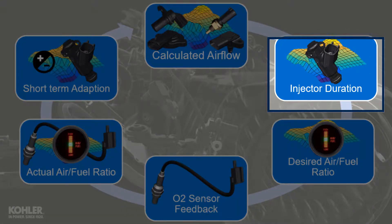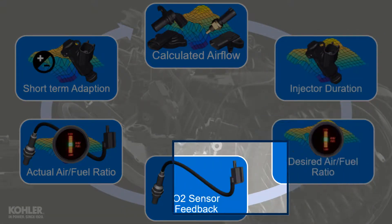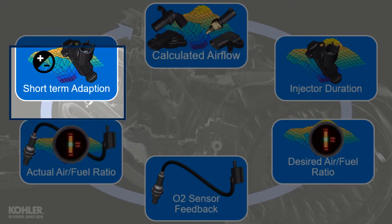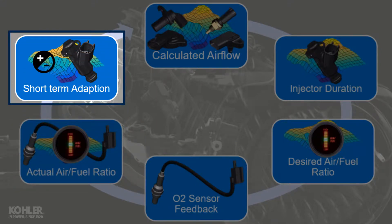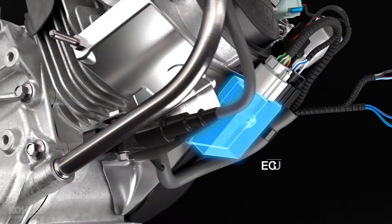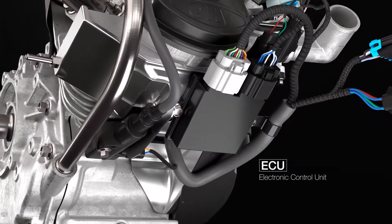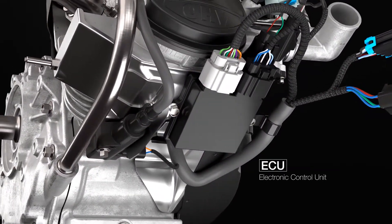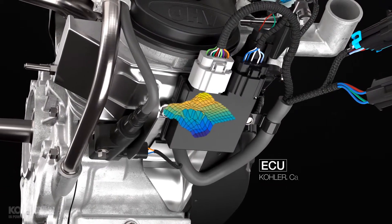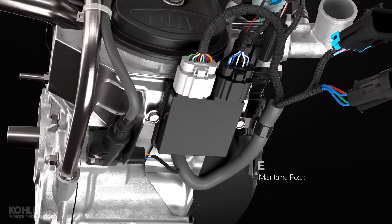The ECU continuously adjusts injector time to achieve the desired air-fuel ratio. This adjustment is called short-term adaption. When the ECU needs to make the same injector time adjustments repeatedly to achieve the desired air-fuel ratio, these adjustments are saved in ECU memory. These adjustments are called long-term adaption.